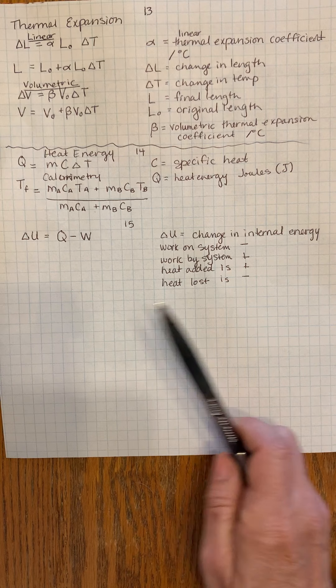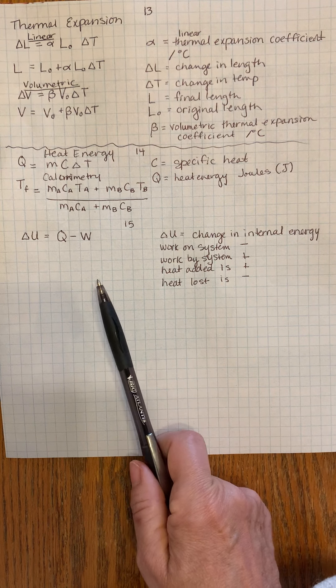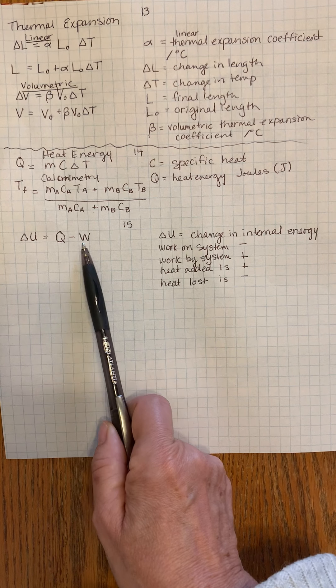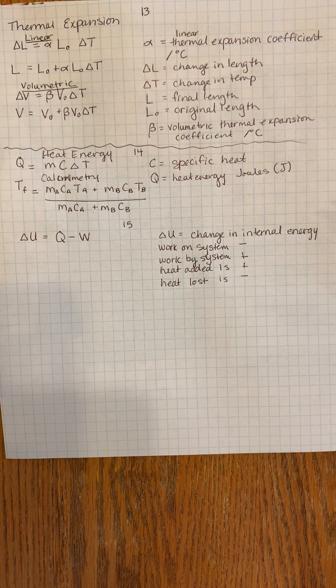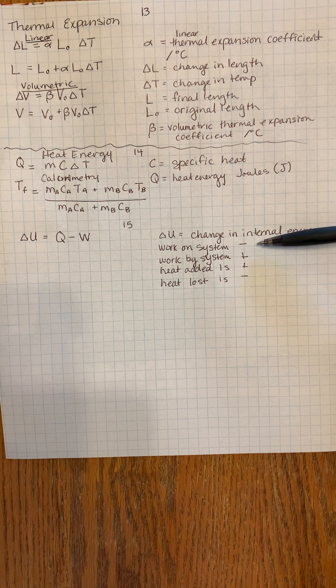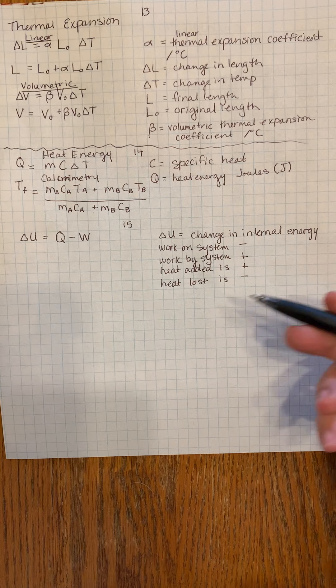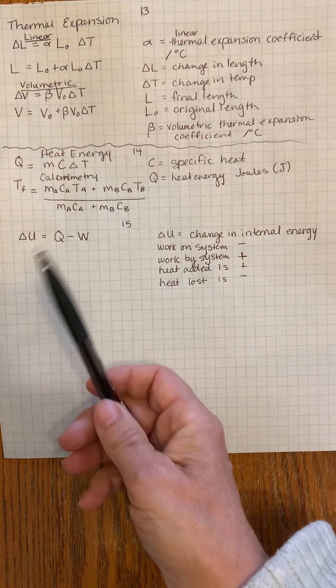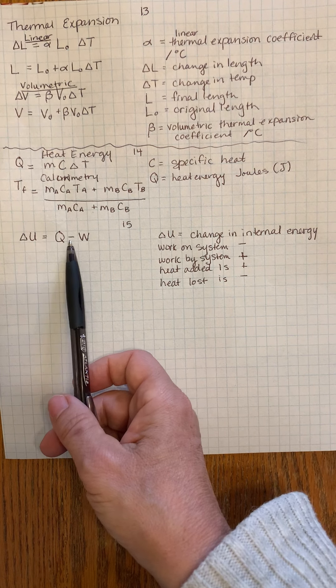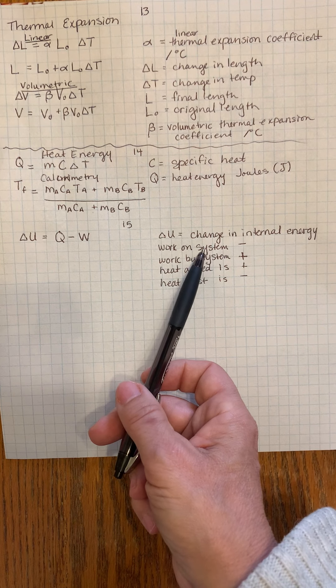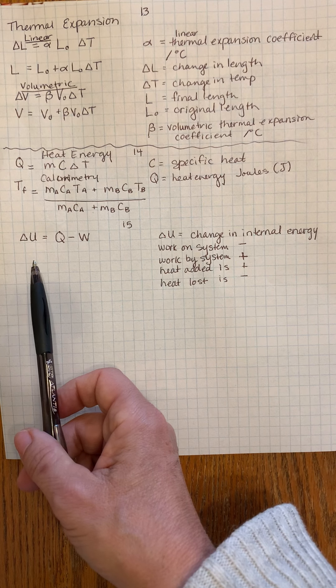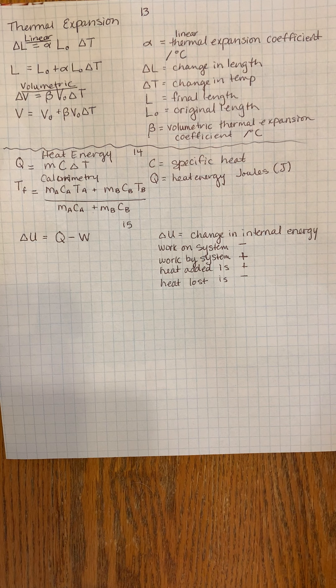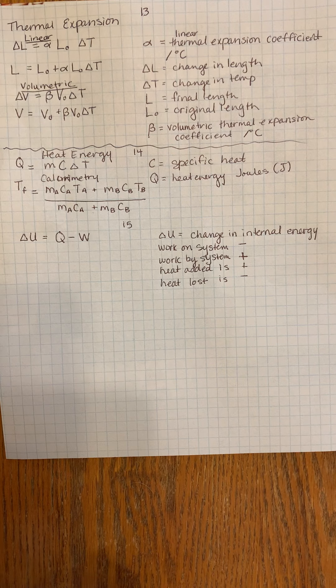The final thing from unit 15 is to find the change in internal energy. This is about the first law of thermodynamics: ΔU equals Q minus W. If the work is done on the system it's negative work. If it's done by the system it's positive work. Heat added is positive and heat lost is negative. You'll need to take that into consideration when you're using this formula.